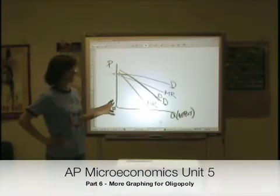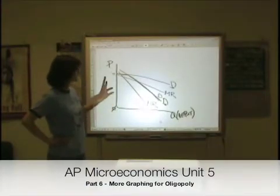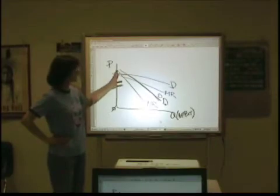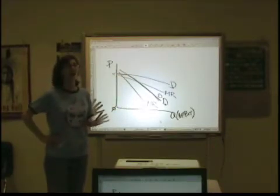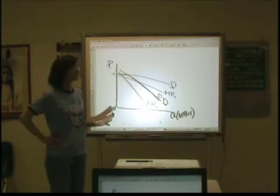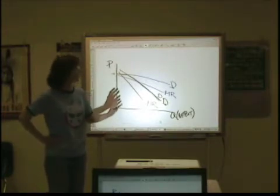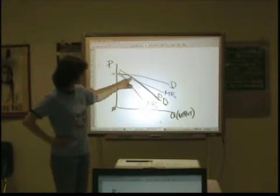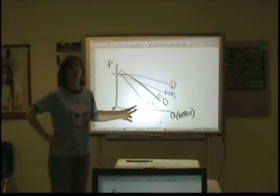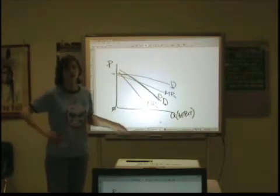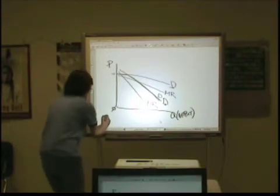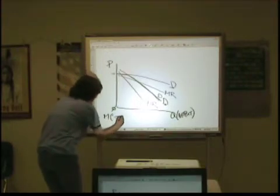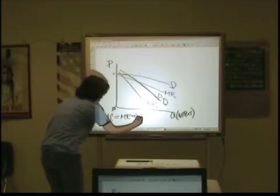One thing that we want to add to this — our oligopoly with our kinked demand curve — is to look at the level of production. We want to know on this funky looking demand curve where the firm is actually going to produce. Remember our rule: marginal cost equals marginal revenue is going to give us our quantity.